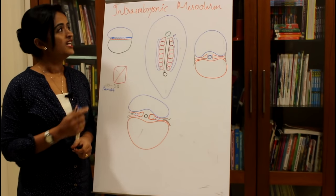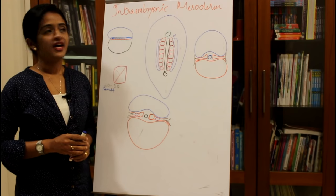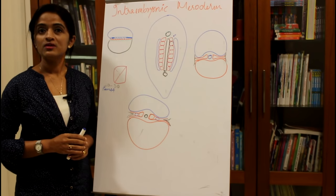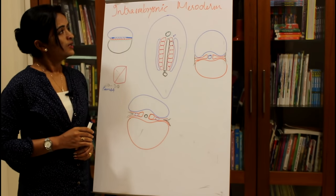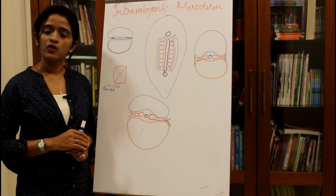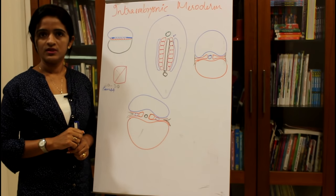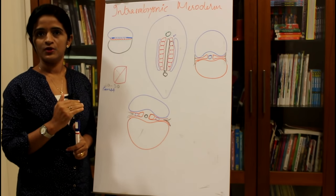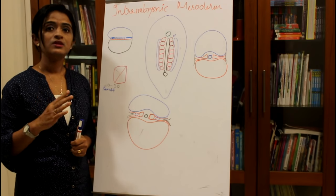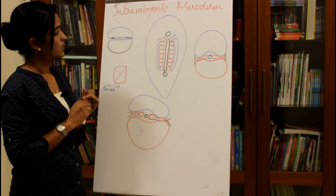In this session we will be dealing with the intra-embryonic mesoderm, which is a very common exam topic. Today we will see the different derivatives of the intra-embryonic mesoderm, with special mention to the somites. As the name implies, intra-embryonic mesoderm is the mesoderm developed within the embryo, as distinct from the extra-embryonic mesoderm seen outside the embryo.